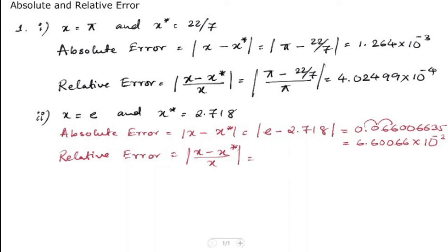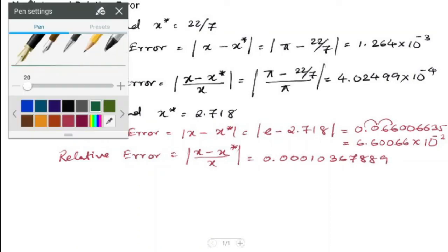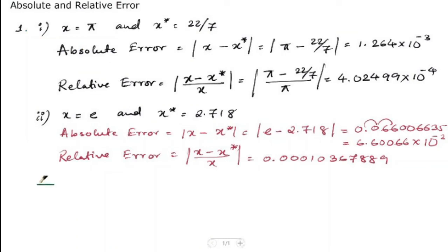And then we have the third part here, where the value of x is root 2 and x star, the approximated value of it, is 1.414.